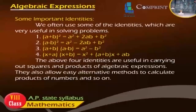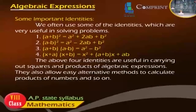Some important identities frequently used in solving problems: Identity 1: (A plus B)² equals A² plus 2AB plus B². Identity 2: (A minus B)² equals A² minus 2AB plus B². Identity 3: (A plus B)(A minus B) equals A² minus B². These four identities are useful for carrying out squares and products of algebraic expressions, and also allow easy methods to calculate products of numbers.